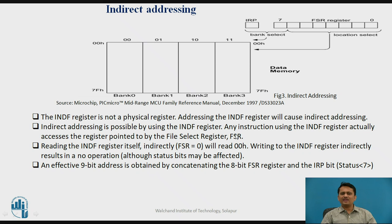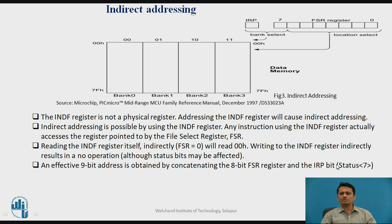When you use INDF, the actual location being accessed is the location pointed to by the FSR register. Note that reading INDF indirectly will read as zero, and writing to INDF indirectly will result in no operation. The effective 9-bit address in indirect addressing is obtained by concatenating the 8 bits of FSR with the IRP bit of the status register, which is the most significant bit.